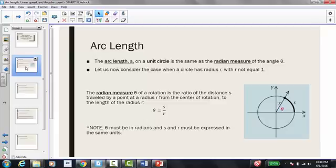The arc length on a unit circle is the same as the radian measure of angle theta. If we look at a circle that does not have a radius of 1, which means the circle is not the unit circle, then this is not the case. So if we look at a circle that has a radius r, the radian measure theta of a rotation is the ratio of the distance s, which is called the arc length, to the length of the radius r.